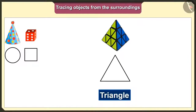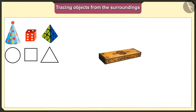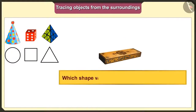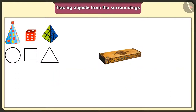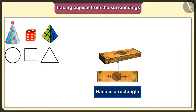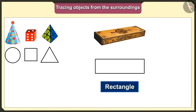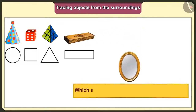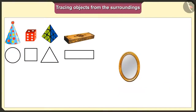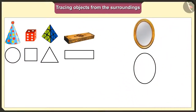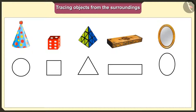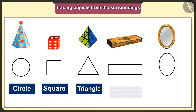Friends, can you all guess which shape we would get when we trace this pencil box? Let us trace this pencil box too. The base of the pencil box is a rectangle, so we will get a rectangle shape when we put it on paper and trace it. Now tell me, which shape would we get when we trace this mirror? The base of this mirror is oval, so we will get an oval shape when we trace it. So today we traced the objects in our surroundings and got the shapes: circle, square, triangle, rectangle, and oval.